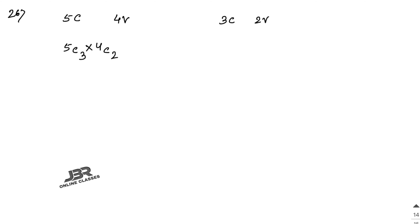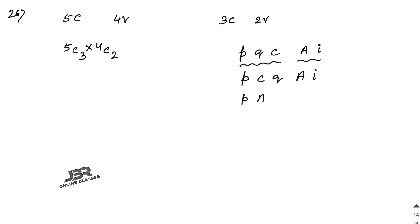Now, you have to create a word with three consonants and two vowels. You can rearrange these five letters, so the total is 5C3 × 4C2 × 5 factorial. That is your final answer.